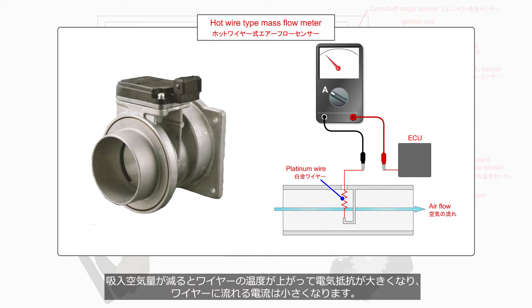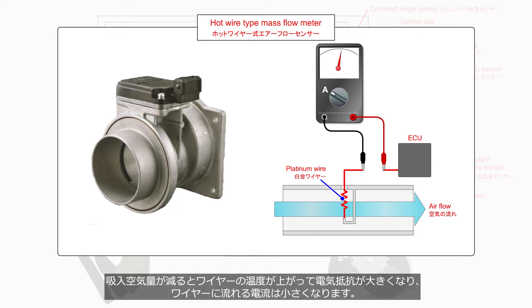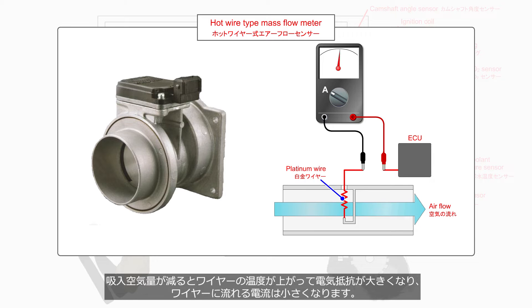Conversely, when the air intake volume decreases, the wire's temperature increases, leading to a higher electrical resistance and a lower electric current flowing through the wire.